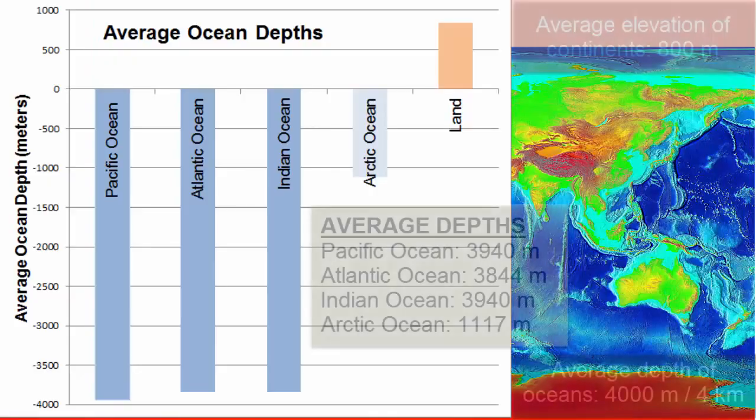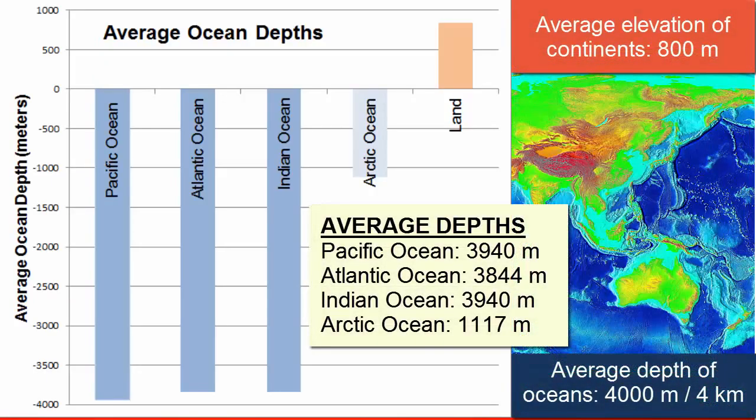Here is another image that shows the average depths of the four major oceans and compares them to the average elevation of the continents. Again we see how many times deeper the oceans are, on average, than the land is high. This image also shows how much shallower the Arctic Ocean is than all the others.